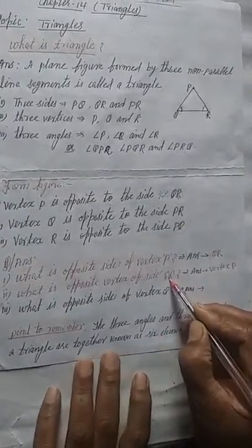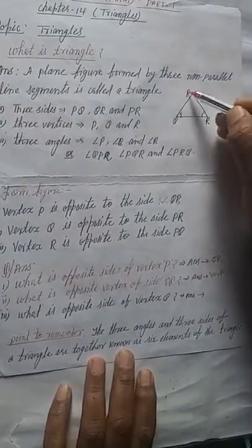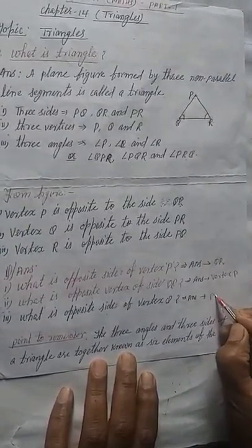Okay, and what is the opposite side of vertex Q? So vertex Q means PR. So we can write here PR.